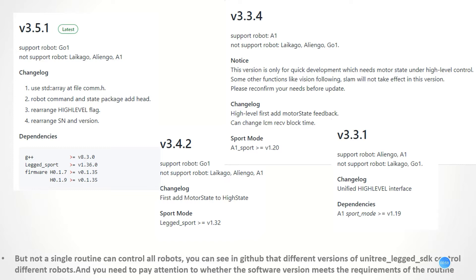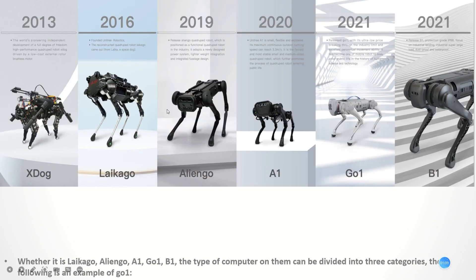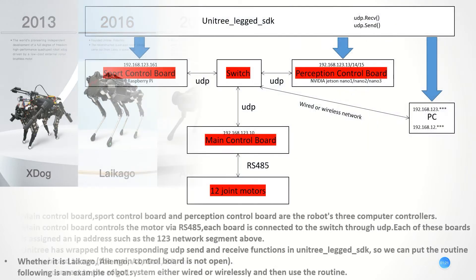You need to pay attention to ensure the software version meets the requirements of the routine. We can confirm the version of our robot dogs here. No matter if it's AlienGo, A1, Go1, or B1, the type of computer on them can be divided into three categories. Next is an example of our Go1.